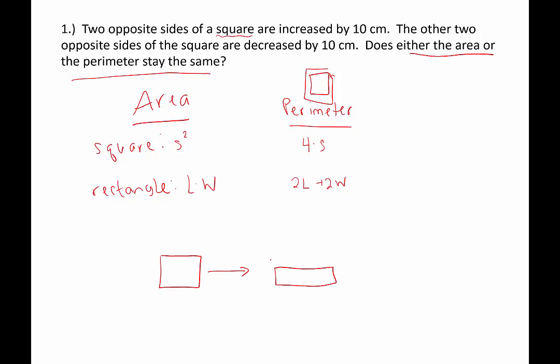There are two strategies I'd suggest here. Number one: we don't know the dimensions of the square — they weren't given — so when we have an unknown number we use a variable. So we can say the side is x, meaning all four sides are x. The other option is to just make up a side length, like 20 centimeters. That's fine, but you have to be careful — if you're decreasing a side by 10, you can't choose a side length of 6 centimeters.